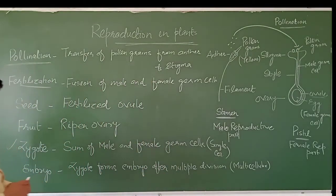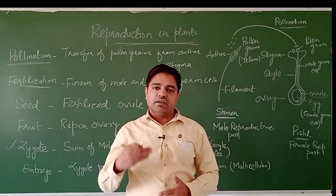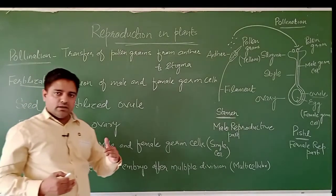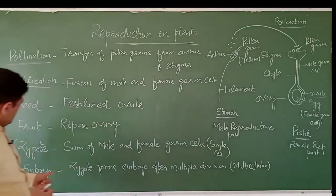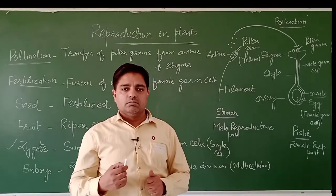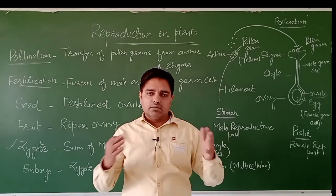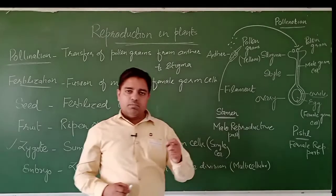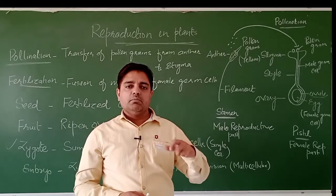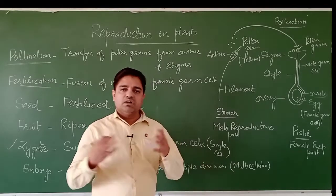After the formation of the zygote inside the ovule, the embryo develops. The embryo is the next stage of the zygote. When the zygote multiplies through mitosis and makes many cells, it forms an embryo, which is a multicellular structure. So: zygote is a single cell structure, and embryo is a multicellular structure.